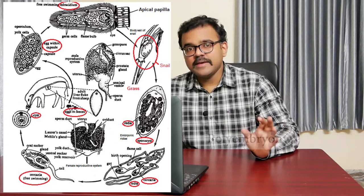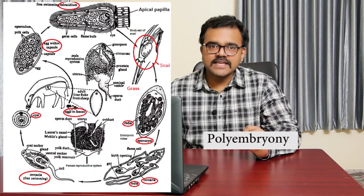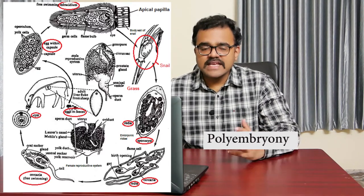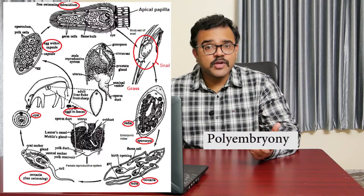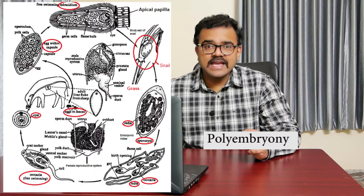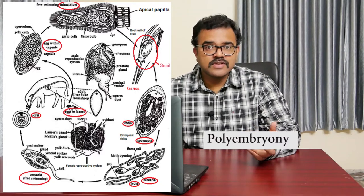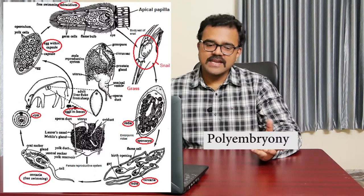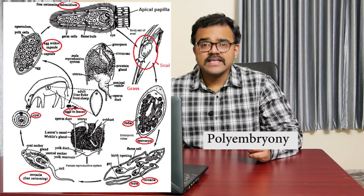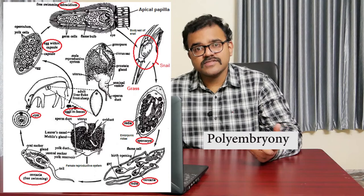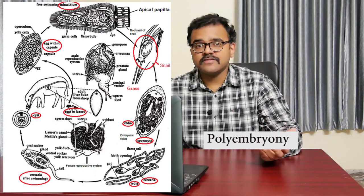Polyembryony in Fasciola Hepatica occurs during the transition from a miracidium to a sporocyst, where the embryo divides repeatedly to give rise to numerous sporocysts of similar kind. Polyembryony is an adaptation of the parasitic mode of life, ensuring prolific breeding and maintenance of sufficient numbers of the parasite through the different stages of the parasitic life.